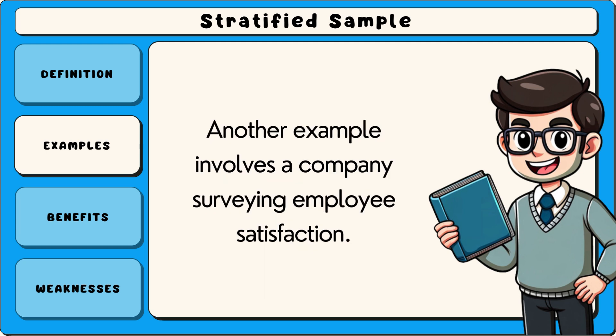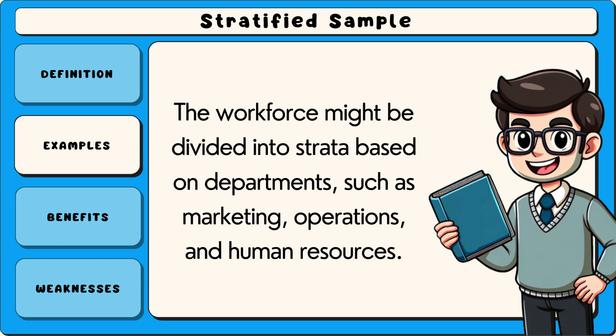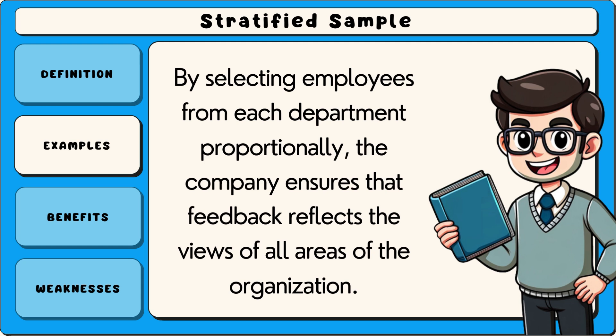Another example involves a company surveying employee satisfaction. The workforce might be divided into strata based on departments, such as marketing, operations and human resources. By selecting employees from each department proportionally, the company ensures that feedback reflects the views of all areas of the organisation.